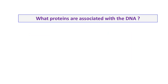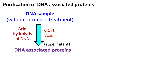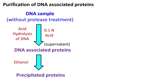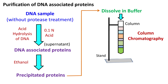To purify these proteins, the DNA sample was treated with acid and centrifuged. The treatment with acid will cause acid hydrolysis of DNA, breaking it down into monomers of A, T, G, and C. The supernatant left after centrifugation will have all the proteins that were associated with the DNA. When this supernatant is treated with alcohol, the proteins are precipitated. The precipitated proteins were dissolved in an appropriate buffer and analyzed by column chromatography.